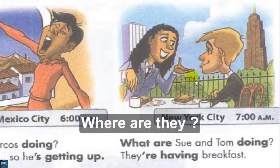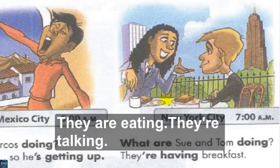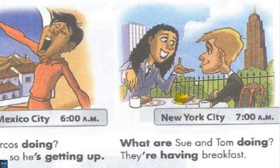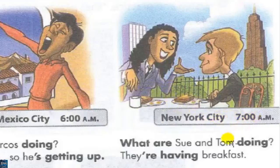Where are they? They are in a restaurant. They're eating, they're talking. In which city are Sue and Tom? They are in New York City. What time is it now in New York City? It's 7 AM, it's 7 o'clock in the morning. What are Sue and Tom doing? They're having breakfast.